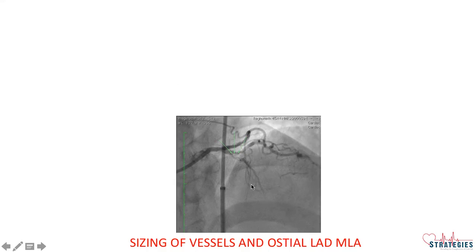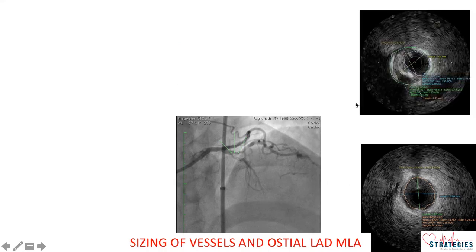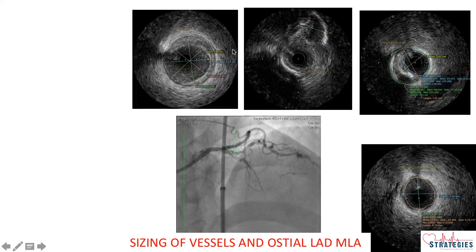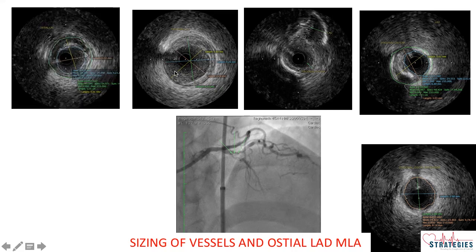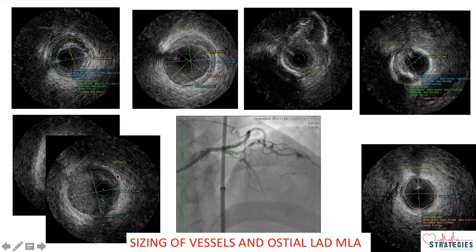Coming to the sizing of the vessels to plan the stenting strategy, in this case the diagonal looked almost 2.9 to 3 mm, and this is ostial diagonal which is around 3 mm. This is the entry point for LAD, and proximal LAD is looking around 4 mm. This is ostial LAD with MLA of more than 5 mm square with a plaque area of around 50 percent. I decided to leave ostial from stenting. This is a polygon of confluence with 9.7 mm square and this is LMCA with mild plaque.